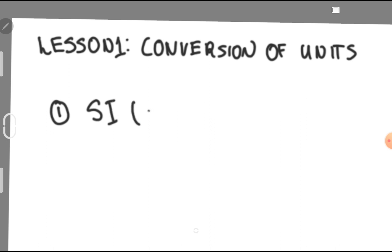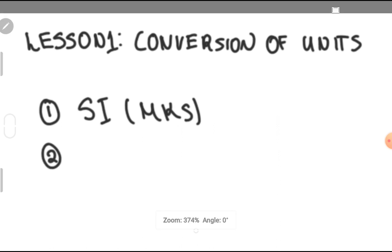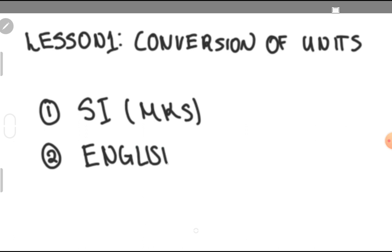Number one is the SI unit, which is also called the MKS or meter-kilogram-second system. This was developed by the French. And number two is your English unit, also known as the US customary unit.